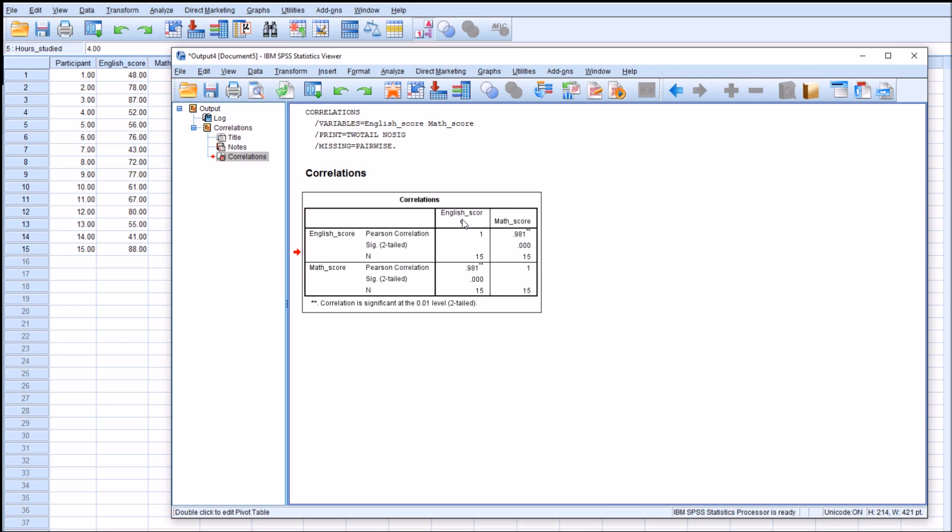Because there's only two variables, you would only see one correlation. You see the same correlation value here, but it's really just the same thing. Because that's English in this column and then math in that column, and English in this row and then math in that column. So it's just doing the same thing twice. Because the more variables you have, the larger this correlation matrix becomes. That's pretty much how you calculate Pearson's correlation using the bivariate correlation method in SPSS.